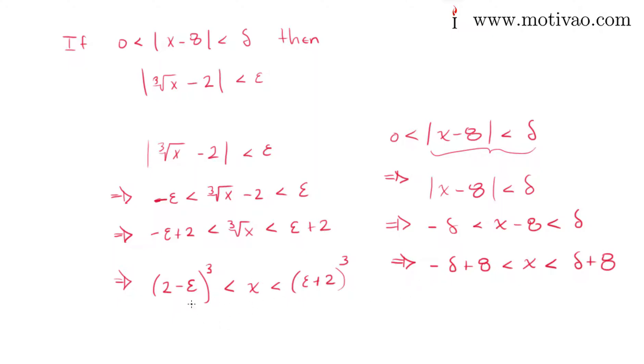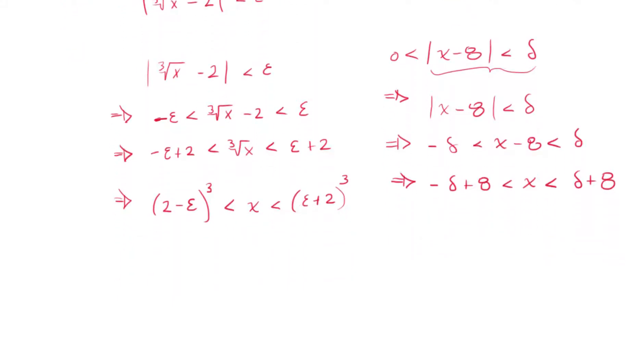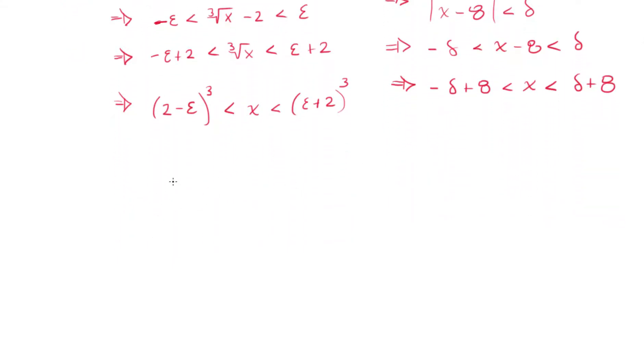So now look at the correlation between this side and this side. What I'm going to do here is I'm going to say, in order to satisfy this, I'm going to make this greater or equal than this, and this side greater or equal than this side. So I'm going to make 2 minus epsilon cubed less than or equal to 8 minus delta.